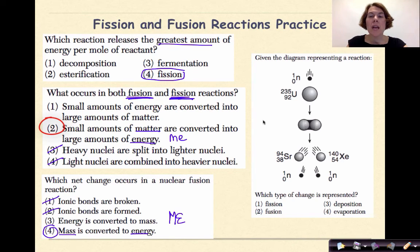Finally, given the diagram representing a reaction, which type of change is represented? So we have a particle hitting a target nucleus, forming an intermediate, and breaking down into lighter nuclei and more particles. So that's definitely not deposition or evaporation because those have to deal with phase changes. So you're either dealing with fission or fusion. Now fusion is making something bigger, fusing something together. So the only possible answer here is fission, which means to break something apart, because remember, this is just another demonstration of artificial transmutation, which we talked about beforehand.